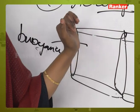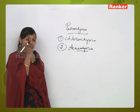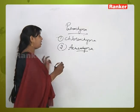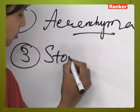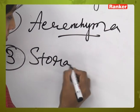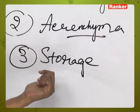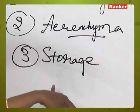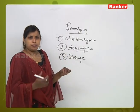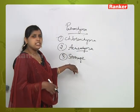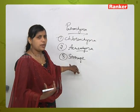This kind of parenchyma tissue which has more air spaces than the normal size of the cell is called aerenchyma. Another type of parenchyma is called storage parenchyma.